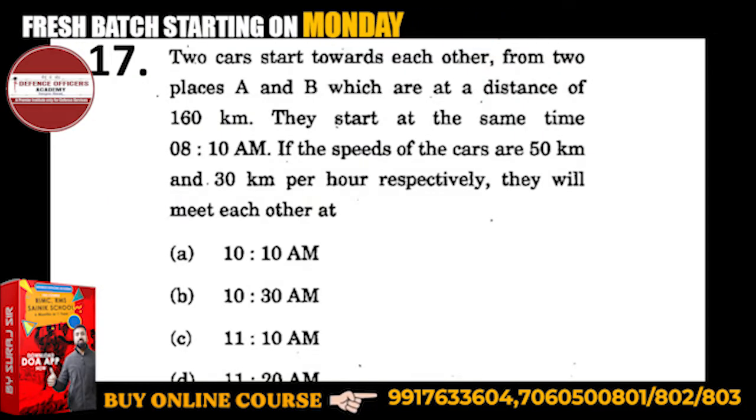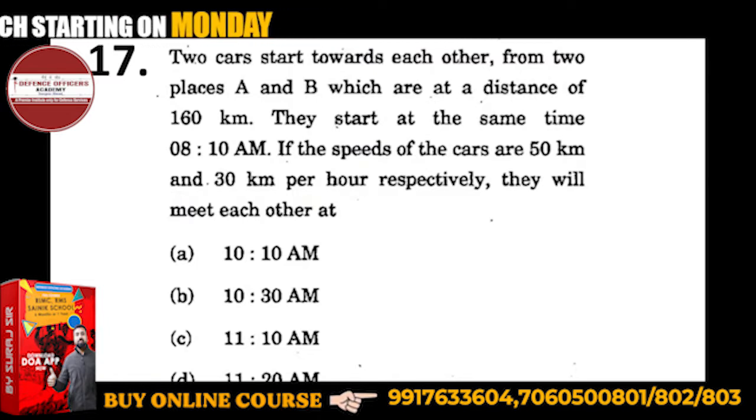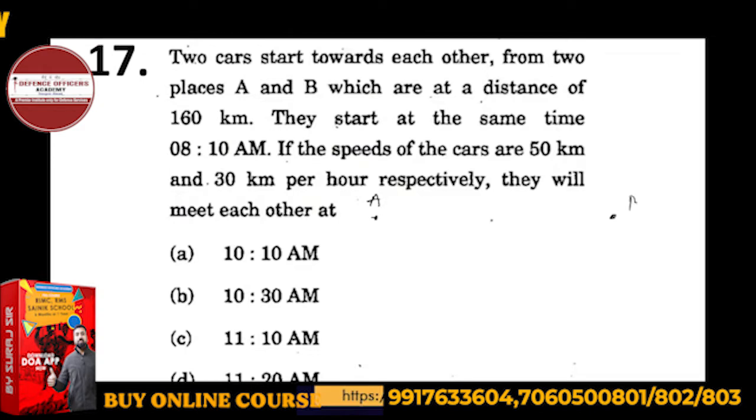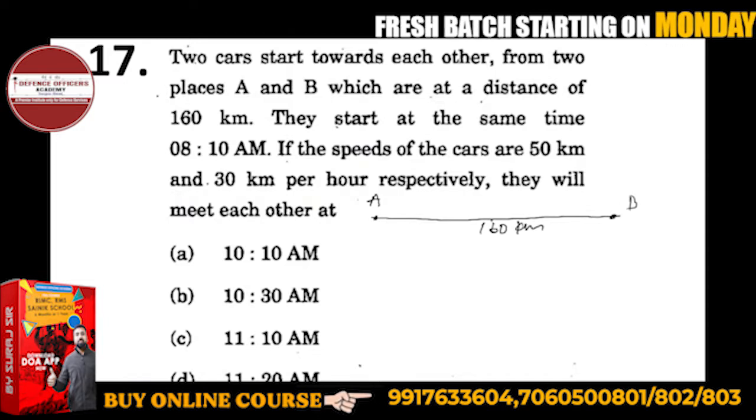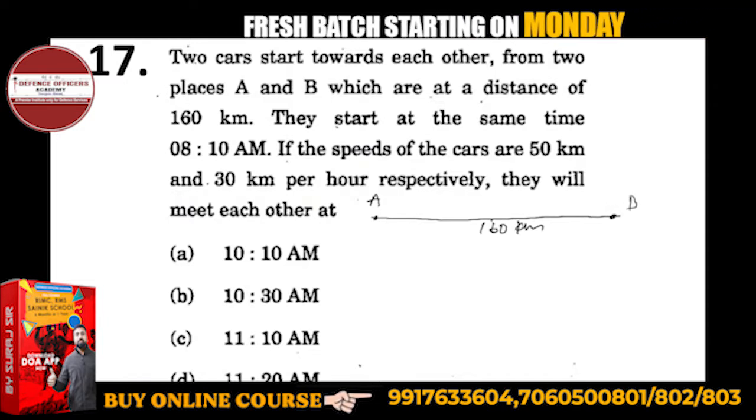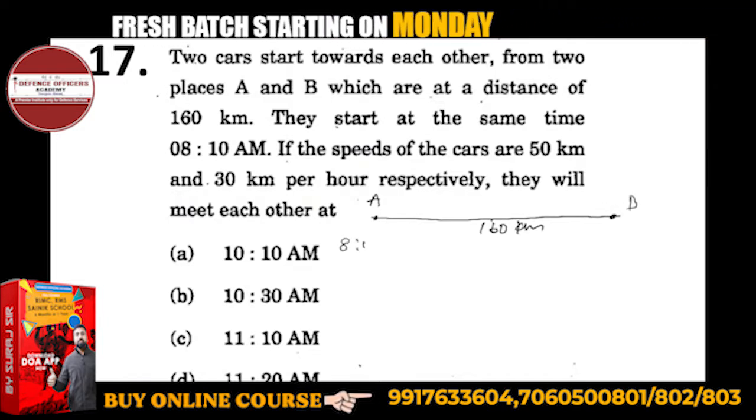Two cars start towards each other from places A and B. Suppose this is place A and this is place B. The two cars are coming from a distance of 160 km, and they start at the same time, 8:10 AM.